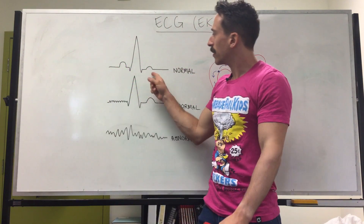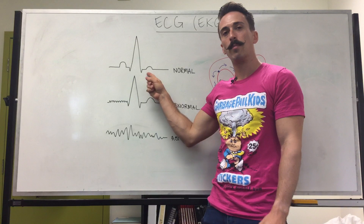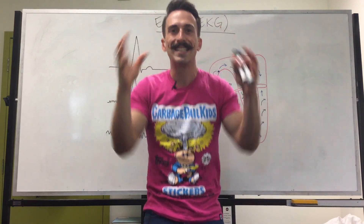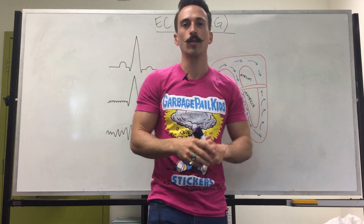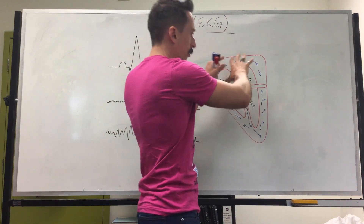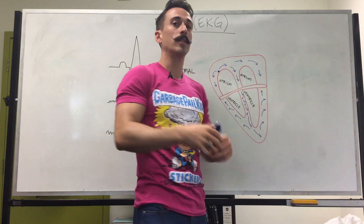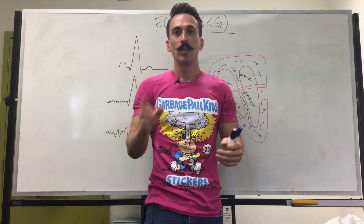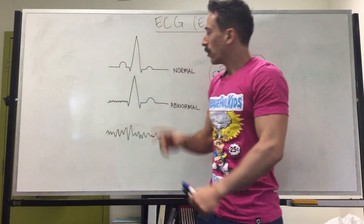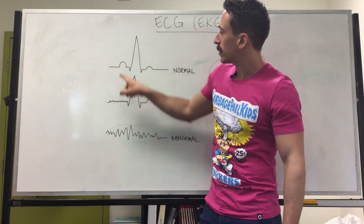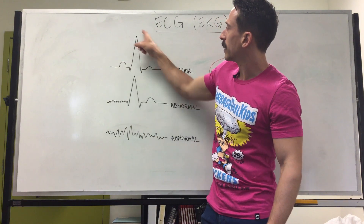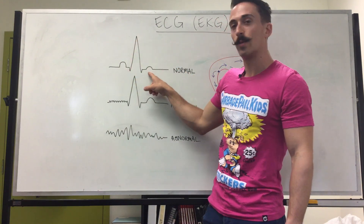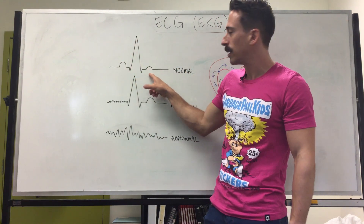And then you can see the very last bump — not very big. This is representing the resetting of the electrical activity throughout the entire heart so it can happen again. So to summarize: this first bump is what's happening in the atria, the big spike is what's happening in the ventricles, and the last bump is the resetting of the heart.